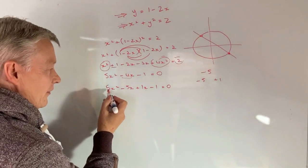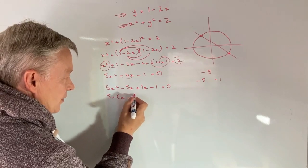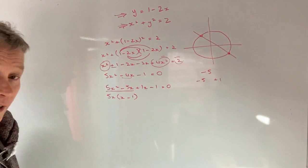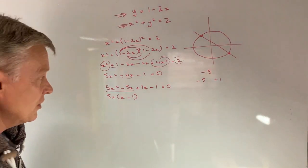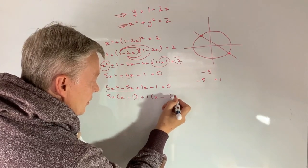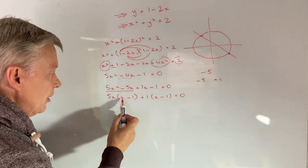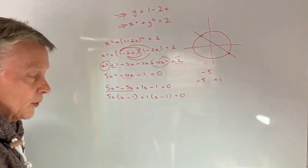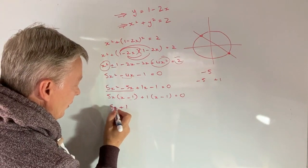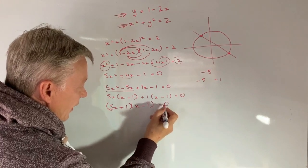But if we look at this, I can factorize that for 5x and I get x minus 1. So those two terms I can factorize like that. The second two terms I can factorize for plus 1 and guess what? I get x minus 1. So now I've got two common terms, x minus 1. So I can rewrite this whole thing as 5x plus 1 multiplied by x minus 1 and that equals 0.